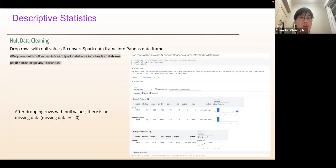For data cleaning, we drop rows with null values and convert the data frame into a pandas data frame. After dropping the rows with null values, there's no missing data. You can see that the missing data percentage equals zero.